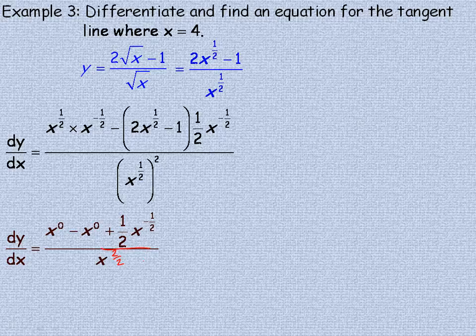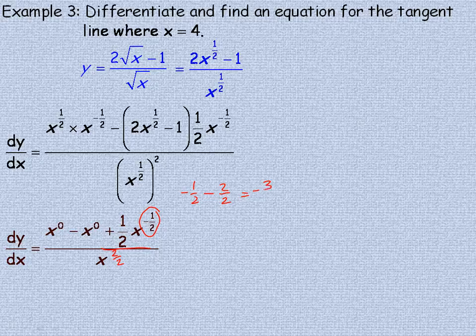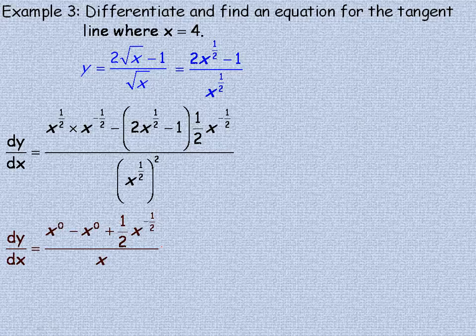So to divide you subtract the exponents. We've got negative a half minus 2 halves in the bottom, which of course is negative 3 halves. So that's the exponent of my x when I write it as 1 single power of x.